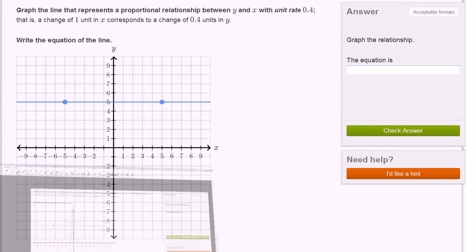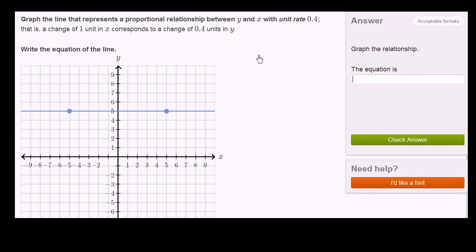So let me get my scratch pad out, and we can think about it. So let's think about some potential x and y values. When we're thinking about proportional relationships, that means that y is going to be equal to some constant times x.